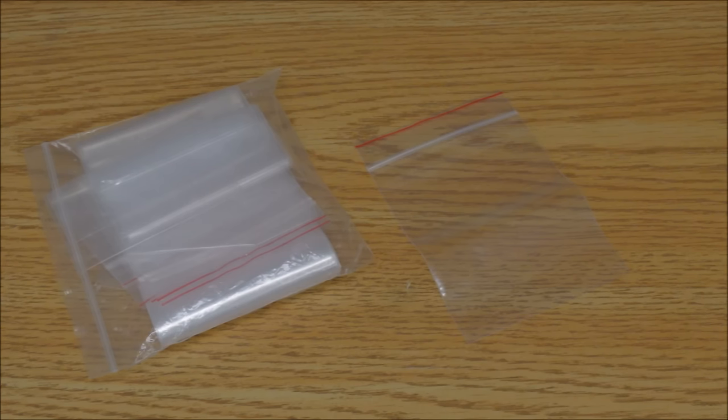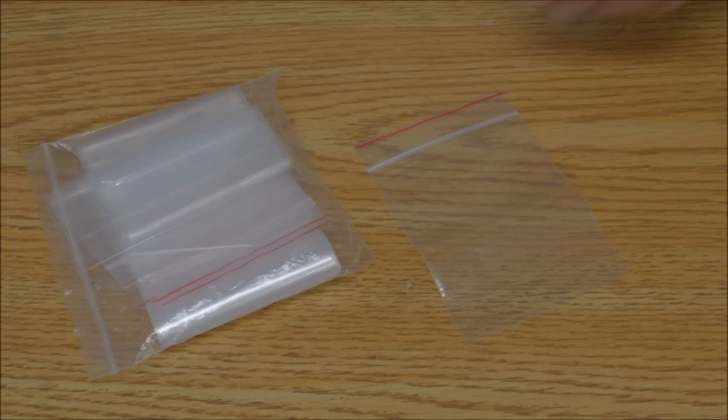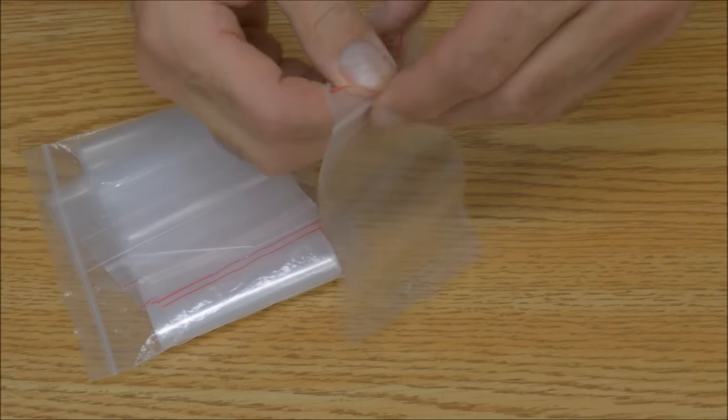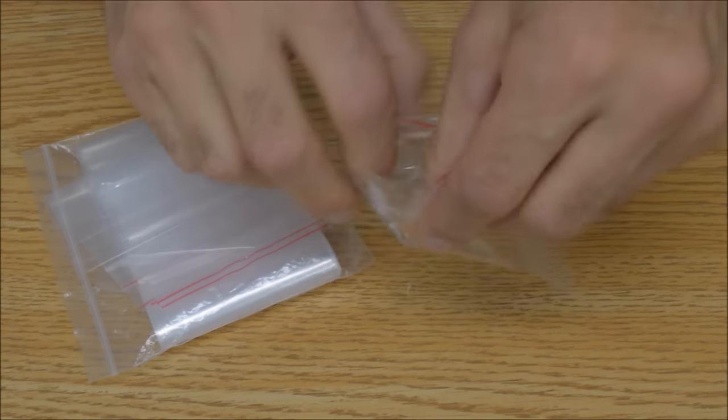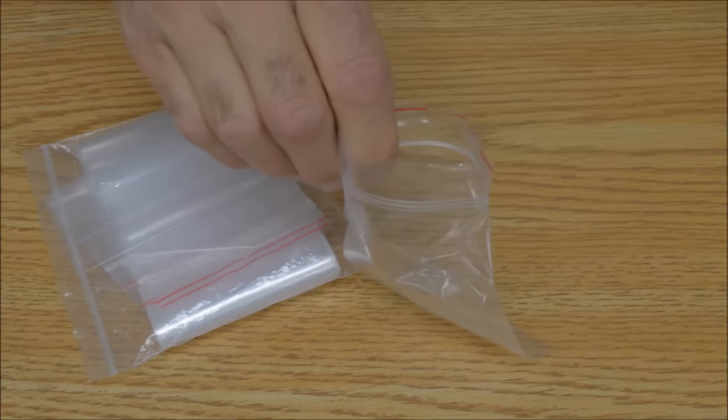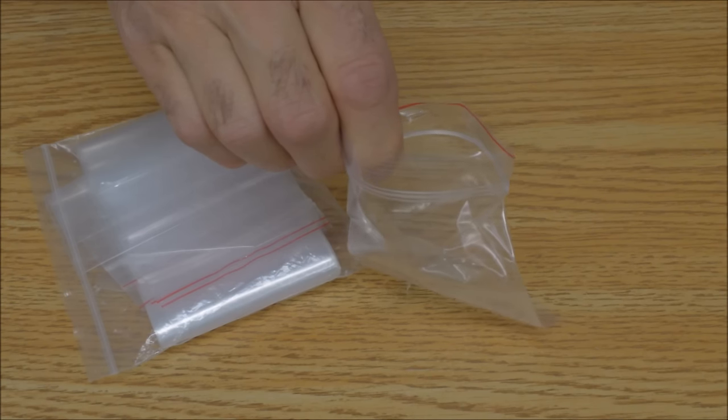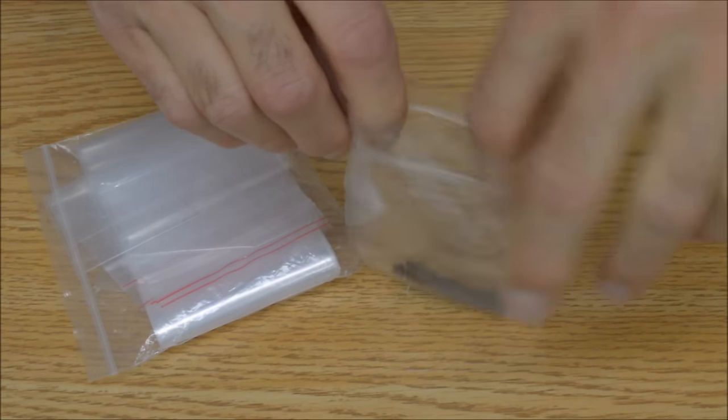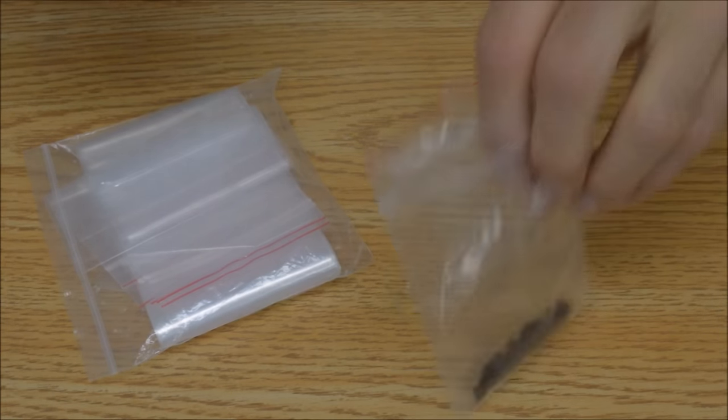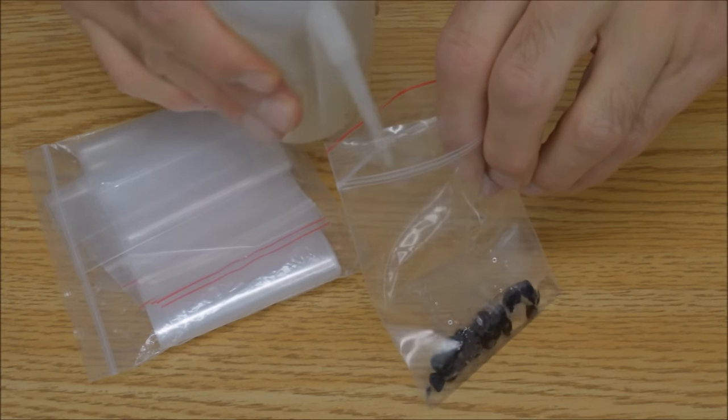The first method uses small ziplock bags. You can get these at dollar stores or hobby stores. Simply add your seeds, some water, and zip up the bags, and you're done. Let them sit for 24 hours.